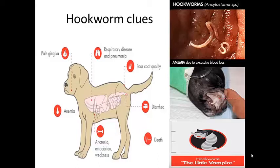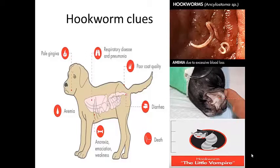Hookworms are another important group we have to consider, and they are probably more dangerous than roundworms. Even though they're smaller in size, they're found in large numbers and are like little vampires that suck blood from the intestines. I've done necropsies on adult dogs that died with severe anemia and found so many of these in the large bowel — it's something I always keep in mind when I have an animal with anemia and large bowel diarrhea.